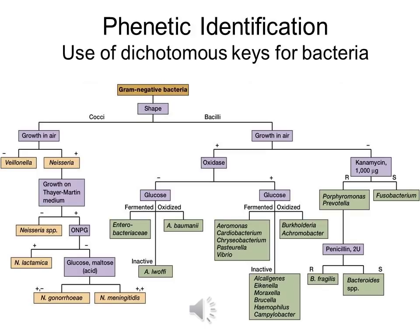Here we can see phenetic classification in which gram-negative bacteria is classified based on their growth in nutrient medium, growth in glucose, growth in cinnamon medium, growth in glucose maltose, growth in penicillin. Based on morphological characteristics — whether they grow in a particular media, whether they are resistant to a particular antibiotic, whether they can utilize a particular sugar — this morphological classification can be called phenetic identification.